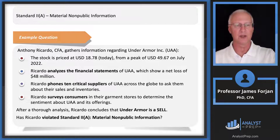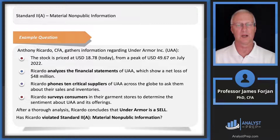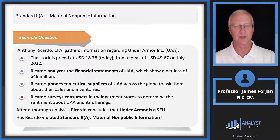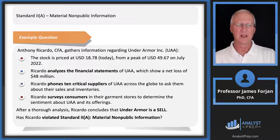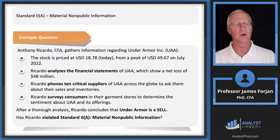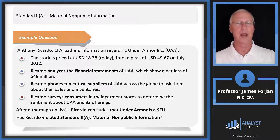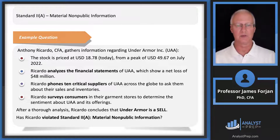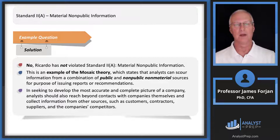Next, we pick up the phone and call the 10 critical suppliers, then call consumers — essentially standing in the parking lot. After this thorough analysis, Ricardo concludes he should sell the stock based on the publicly available net loss, potentially negative operating cash flow, and then the supplier and consumer information. There may not be Wall Street Journal articles about those, but it's information available in the public universe. Ricardo has not violated the standard — this is a prime example of mosaic theory.